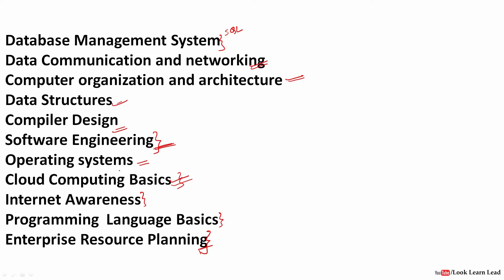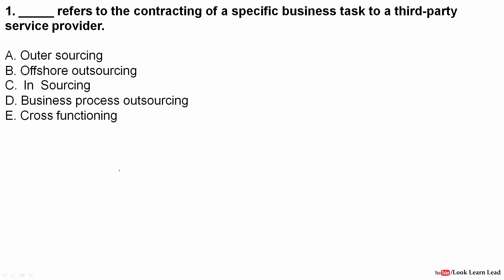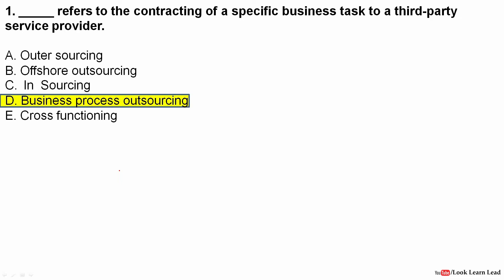Let's see some sample questions from these topics so that you can prepare according to them. The first question: Dash refers to the contracting of a specific business task to a third-party service provider. This question is from Enterprise Resource Planning, and the answer is Business Process Outsourcing.